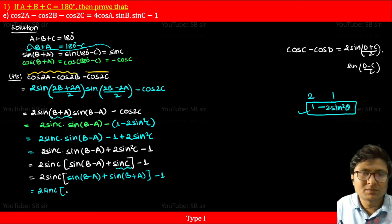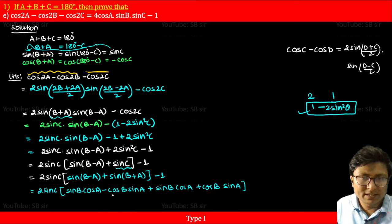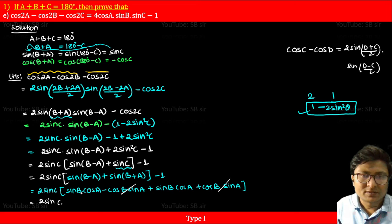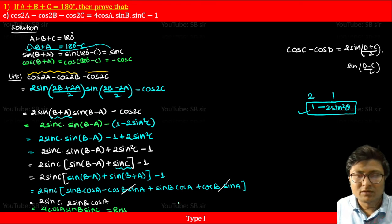Expanding: sin(b minus a) equals sin b cos a minus cos b sin a, and sin(b plus a) equals sin b cos a plus cos b sin a. Adding these two, the cos b sin a terms cancel, leaving 2 sin b cos a. So the expression becomes 2 sin c times 2 sin b cos a, minus 1, which equals 4 cos a sin b sin c minus 1. This equals the RHS, therefore LHS equals RHS. Proved.